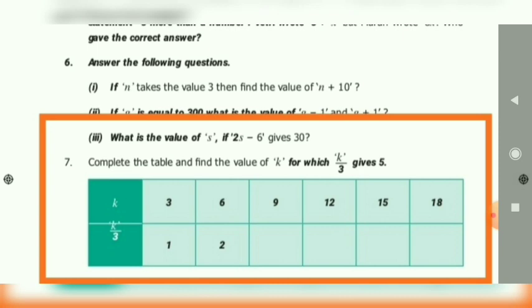So first tabular column, k value is given. So what is the question? k divided by 3. So 3 divided by 3 equals 1. Next, what is k value? 6. 6 divided by 3. What is the equation? k by 3. So in this equation you have to substitute values for k.